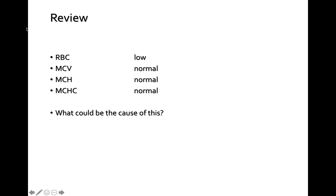With a normal hematocrit but low red cells, this can be from sudden blood loss or chronic diseases — anemia of chronic disease like malignant cancer, chronic infection, chronic autoimmune disorders, kidney failure, or sudden bleeding.